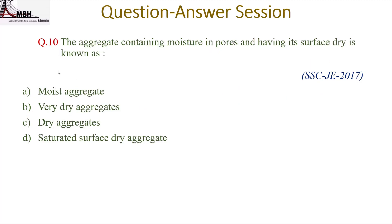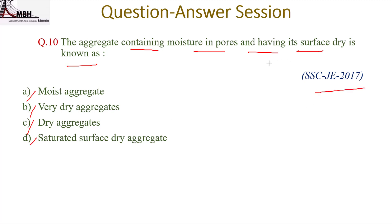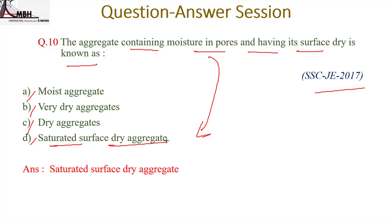Next question: aggregate containing moisture in pores but having its surface dry is known as — moist aggregate, dry aggregate, or saturated surface dry aggregate? Aggregate that contains moisture in its pores but has a dry surface is known as saturated surface dry (SSD) aggregate. The correct option is saturated surface dry aggregate — option D.